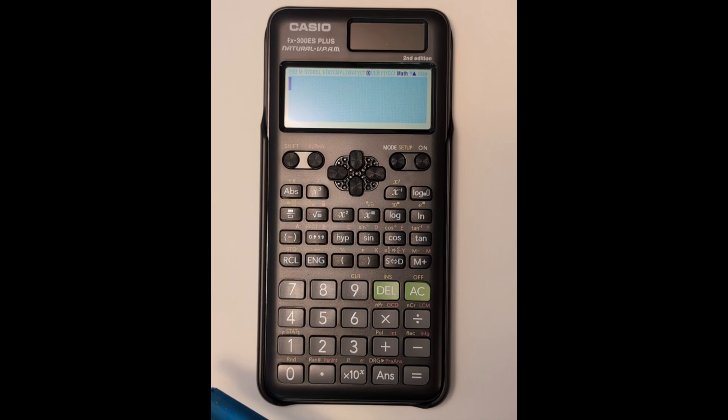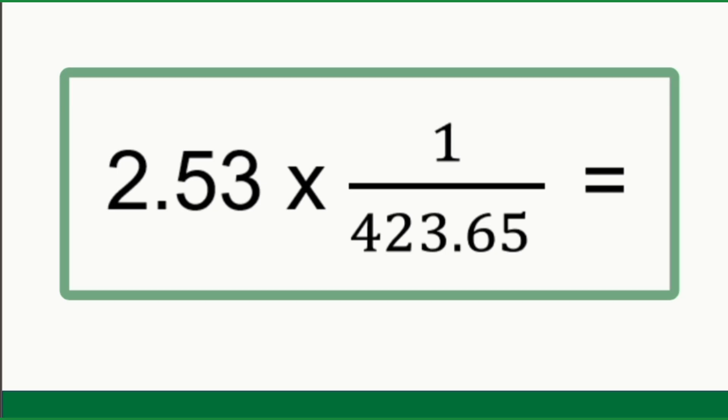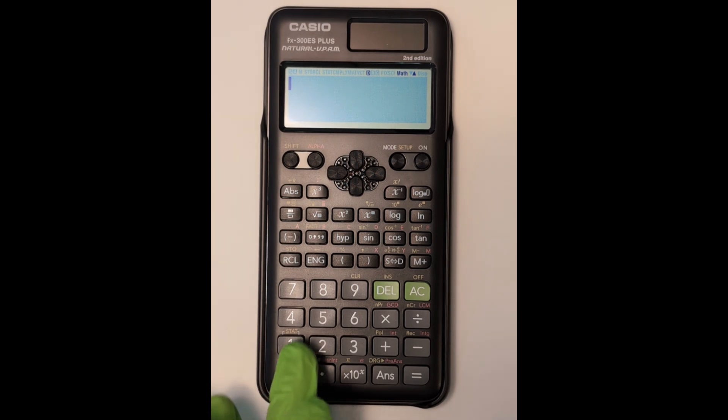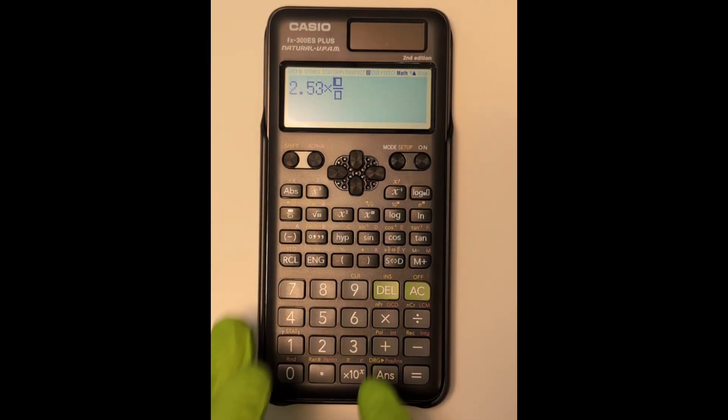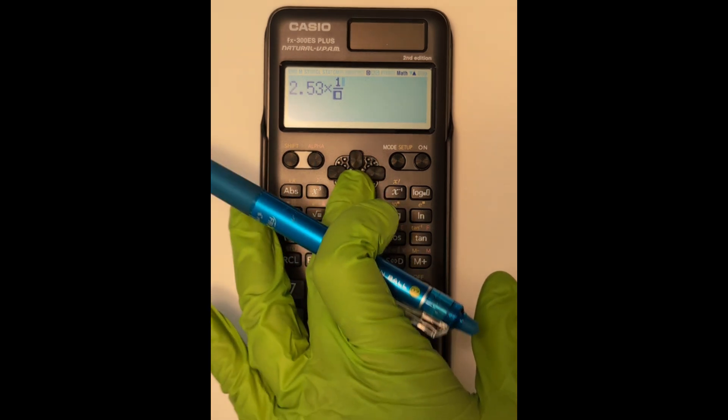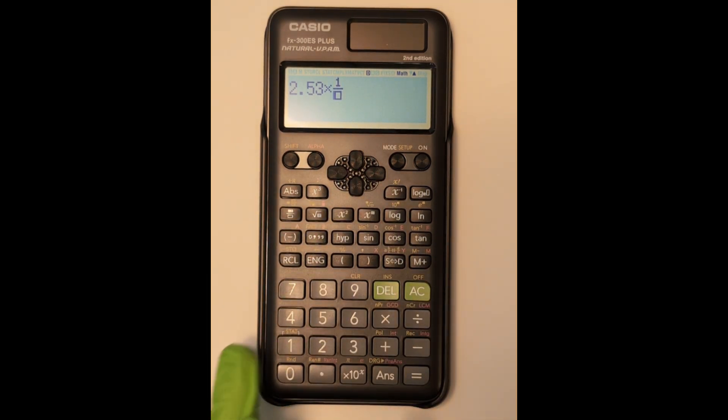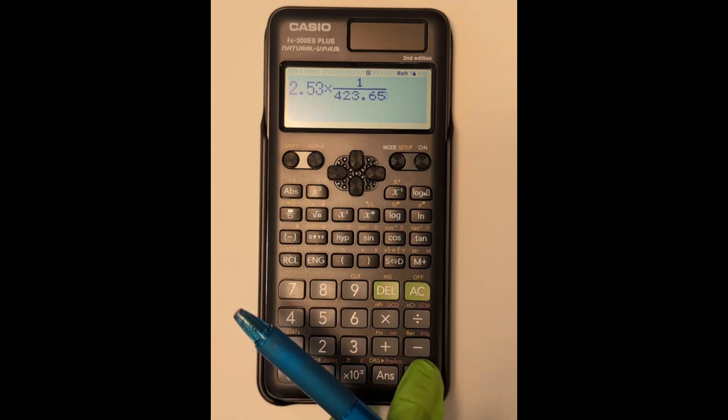All right, let's try some problems. Pause the video and write down this value. This is something you'll see in the class. Now you're going to enter in the first number 2.53 times. You can use the fraction button one over the 423.65, and then hit equal to get your answer.